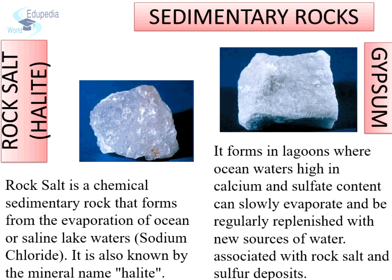Gypsum is a rock formed by the precipitation of calcium sulphate from sea water. It forms in lagoons where ocean waters high in calcium sulphate content can slowly evaporate and be regularly replenished with new sources of water.